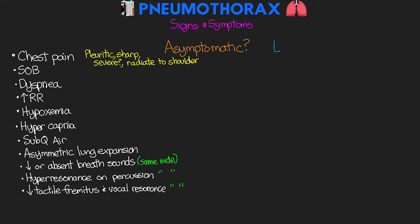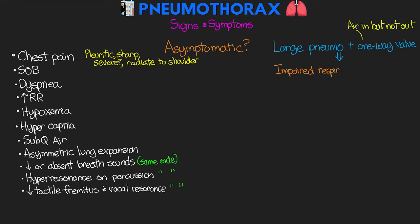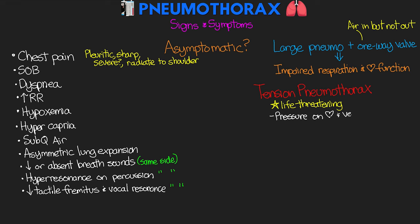If a patient has a pneumothorax that is large enough and a one-way valve exists that's allowing air into that pleural space but not out, it can actually lead to significant impairment of respiration and cardiac function. This is what we refer to as a tension pneumothorax, and this one is potentially life-threatening and does require immediate intervention. The pressure caused by the pneumothorax puts pressure on the mediastinal structures, including the heart and the vena cavas. Ultimately, this can result in a type of obstructive shock that leads to decreased cardiac output and potentially cardiac arrest. If your patient develops this and they are becoming unstable, do not delay treatment waiting on diagnostic imaging — this has to be treated right away.